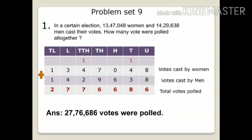Now we need to find out how many votes were cast altogether. Altogether means in total. The total includes all the men's votes and the women's votes. So we need to add women's votes and men's votes to find out the total votes. Let us add these numbers: 13,47,048 plus 14,29,638.